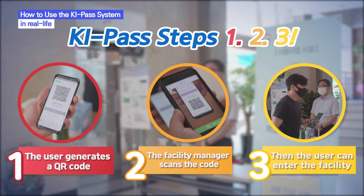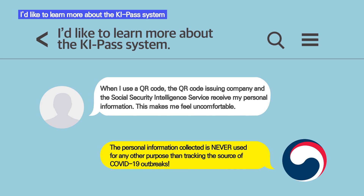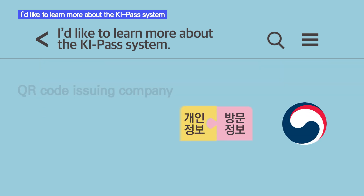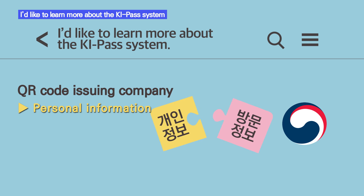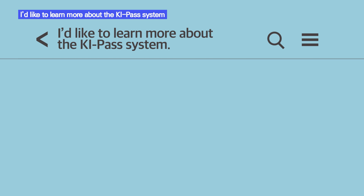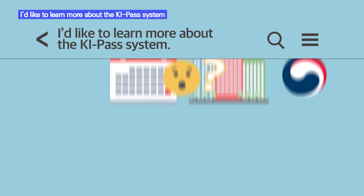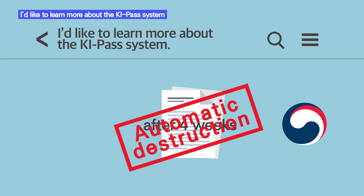Now let's take a look at some of the misconceptions and truths surrounding KeePass. Personal information collected via KeePass is never used for any other purposes than epidemiological investigation. Since the QR code issuing company stores personal information, and the Korea Social Security Intelligence Service encrypts the information before storage and distribution, it is impossible to know who has visited where and when, and the collected information is automatically destroyed after four weeks.